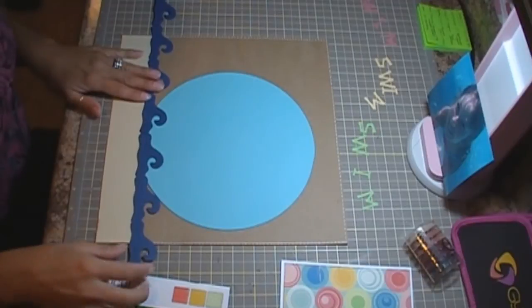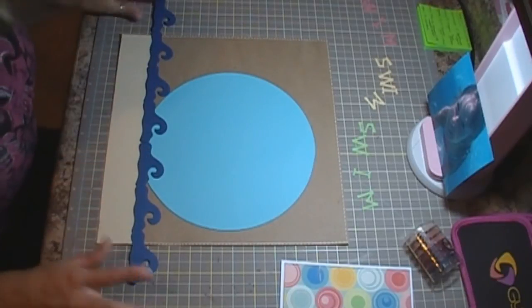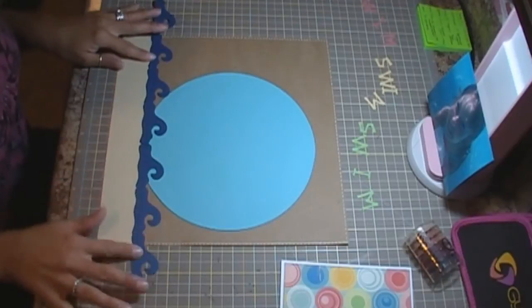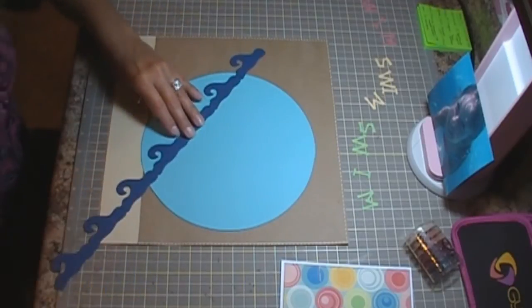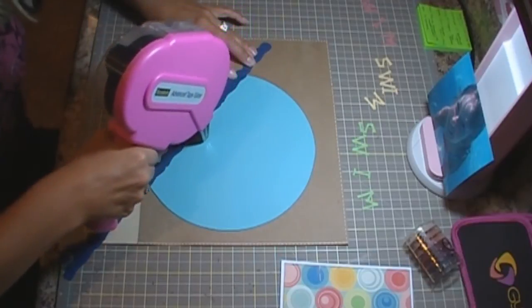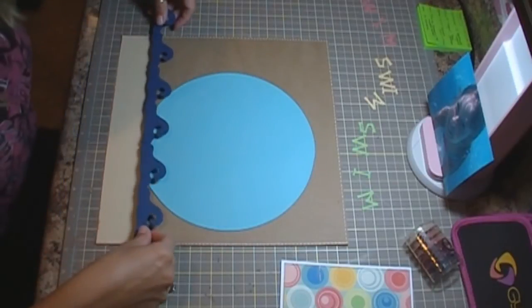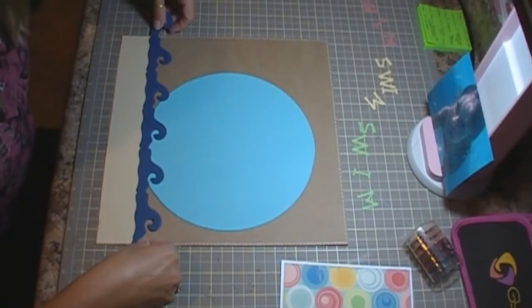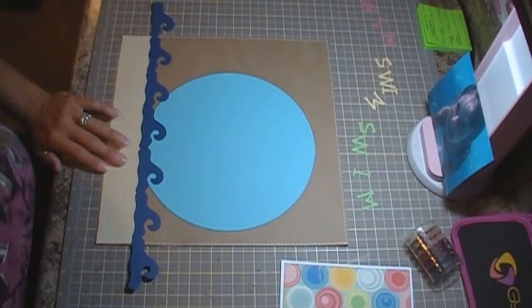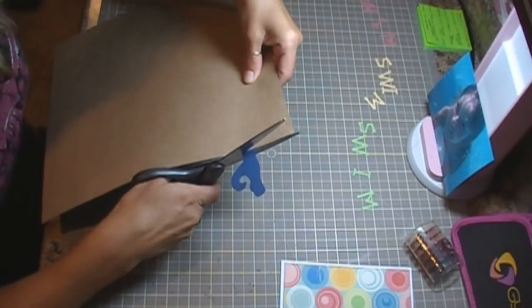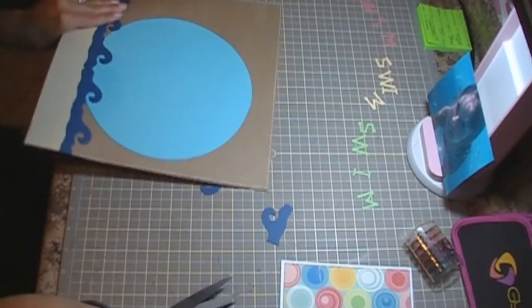Then I have my waves, and I actually use this from the Spongebob cartridge, and I have it cut at 1.36 by 9.5. I actually have two of them, because it wasn't long enough, but I didn't want to make it too long where it was cutting it off. I'm going to go ahead and get this adhered to my page, and then I will just trim off the excess.